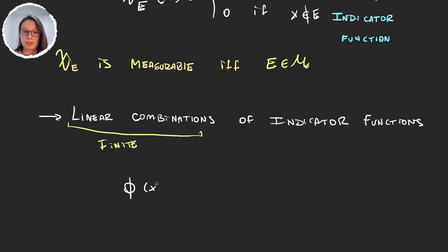One important thing is that this linear combination will be finite. So a function φ is going to be an indicator function if it's of the form Σ aₙ χ_Eₙ(x), where we will say that n goes from 1 up to some capital N.